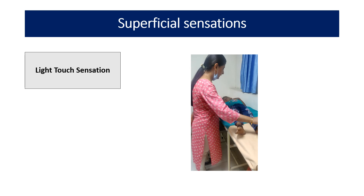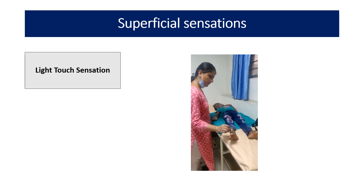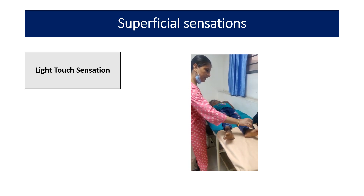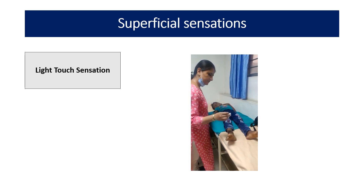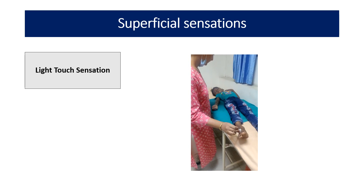To assess superficial sensation, the first test is light touch. We use a cotton wisp. In this video, you can see I am touching the distal body part with the cotton wisp, comparing right to left. The child should respond indicating which part of the body is touched. This is the method for light touch.